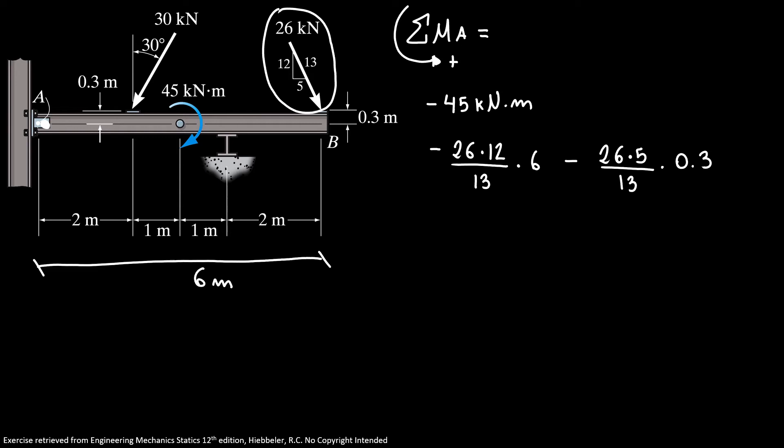So we have minus 30 times cosine of 30 times 2 plus 30 times sine of 30 times 0.3. If we do the algebra, we have the sum of moments about point A equals minus 239.5 kilonewton meter.